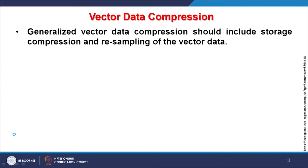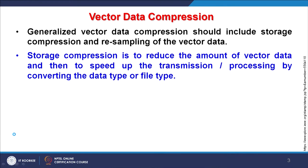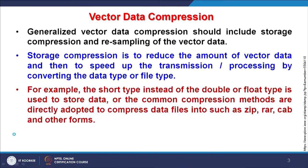Generalization as vector data should also include storage compression and resampling of vector data. This is what we put as generalization. It will also produce storage compression because fewer nodes stored in a system compared to the original dataset will obviously provide storage compression — meaning less space will be required to store that data.